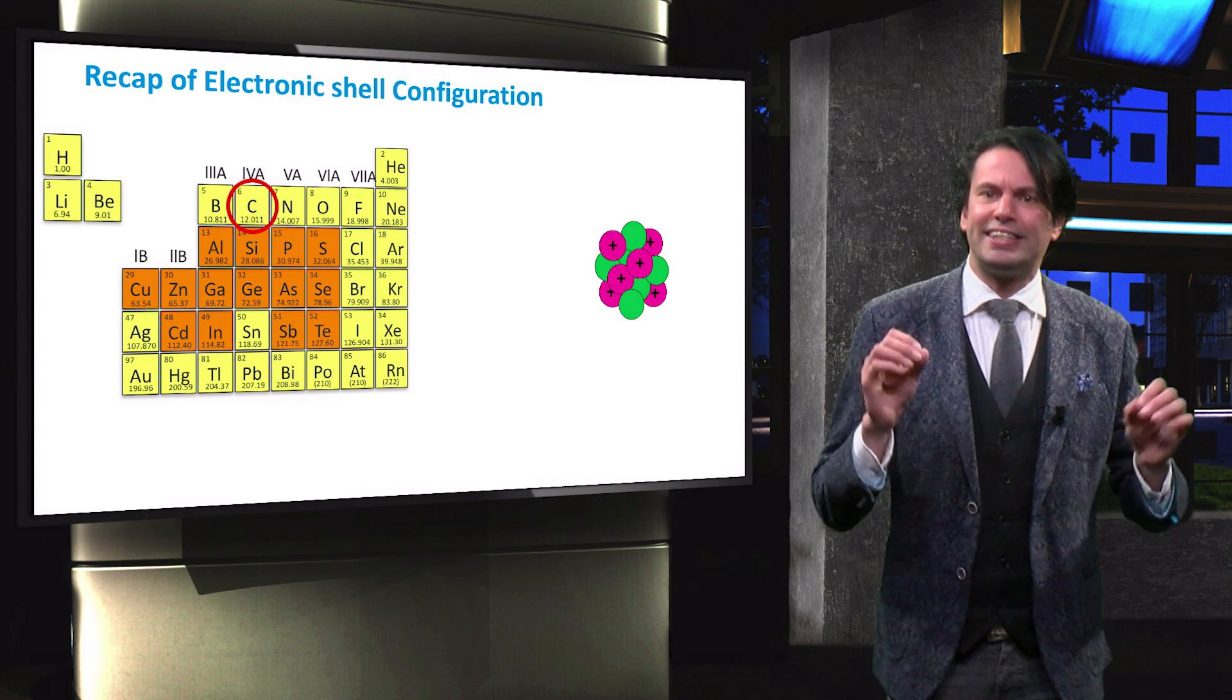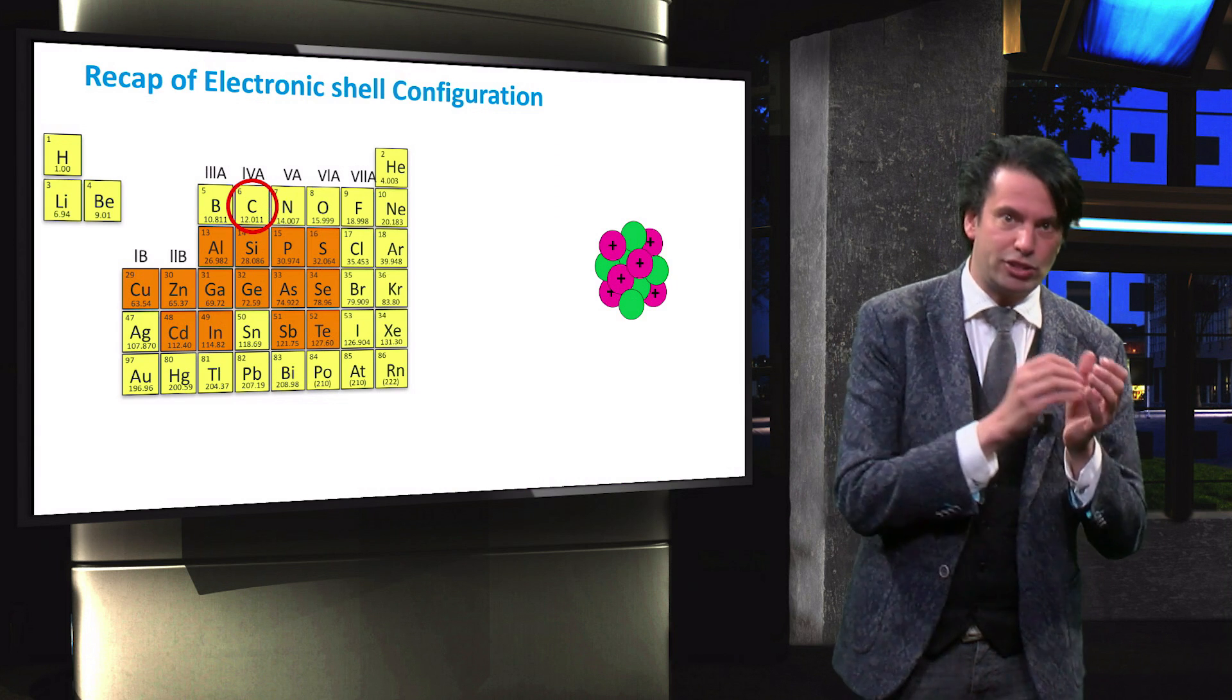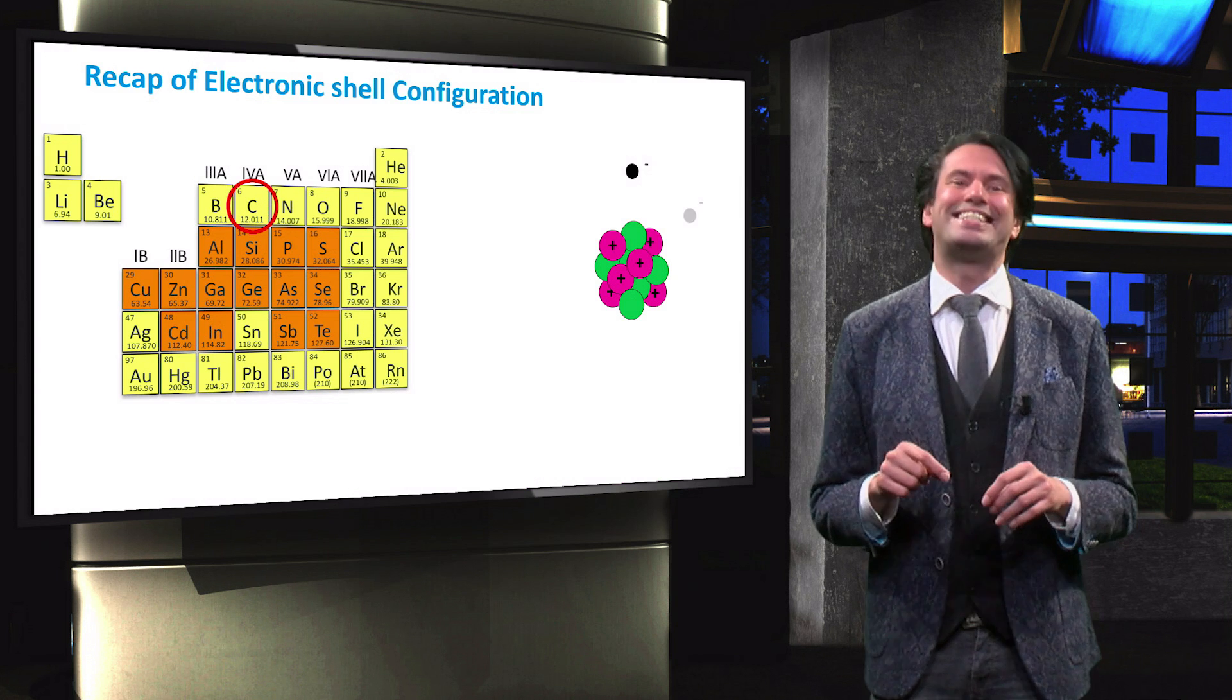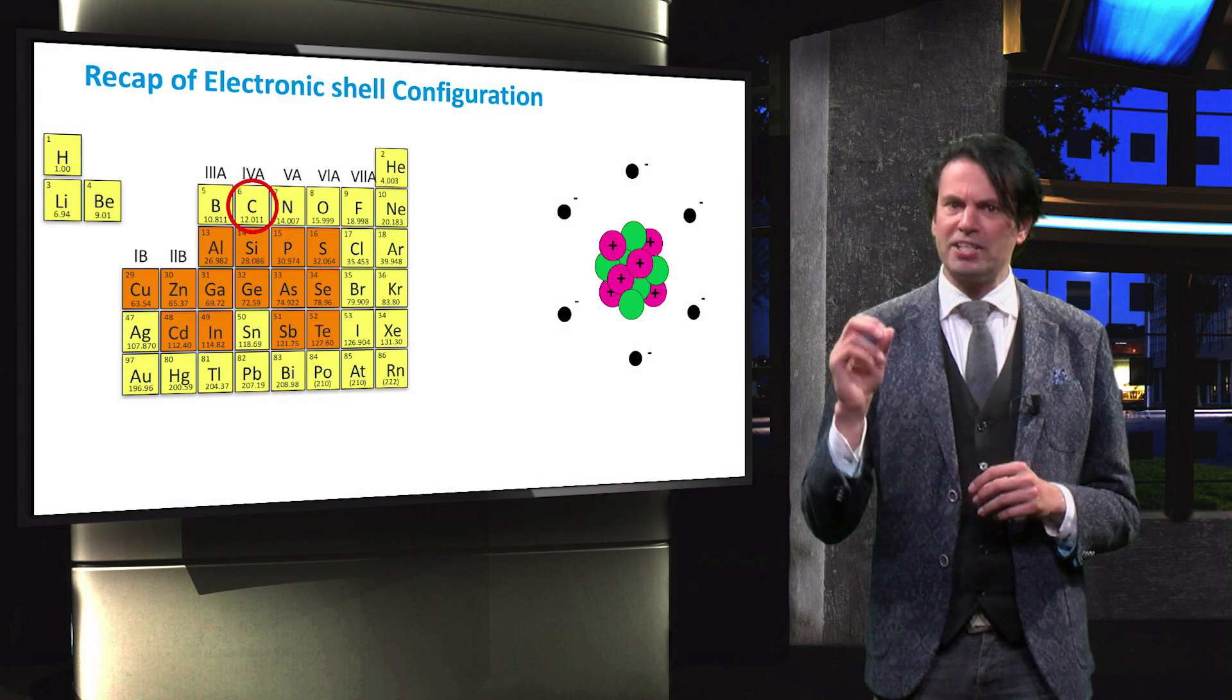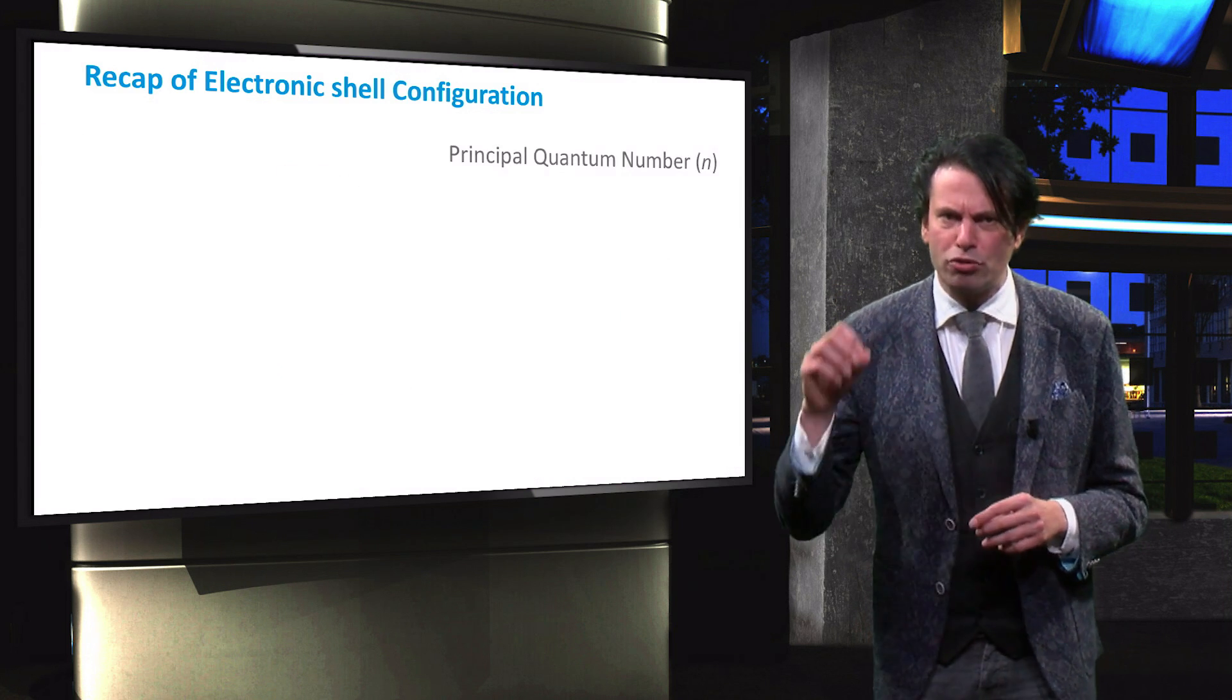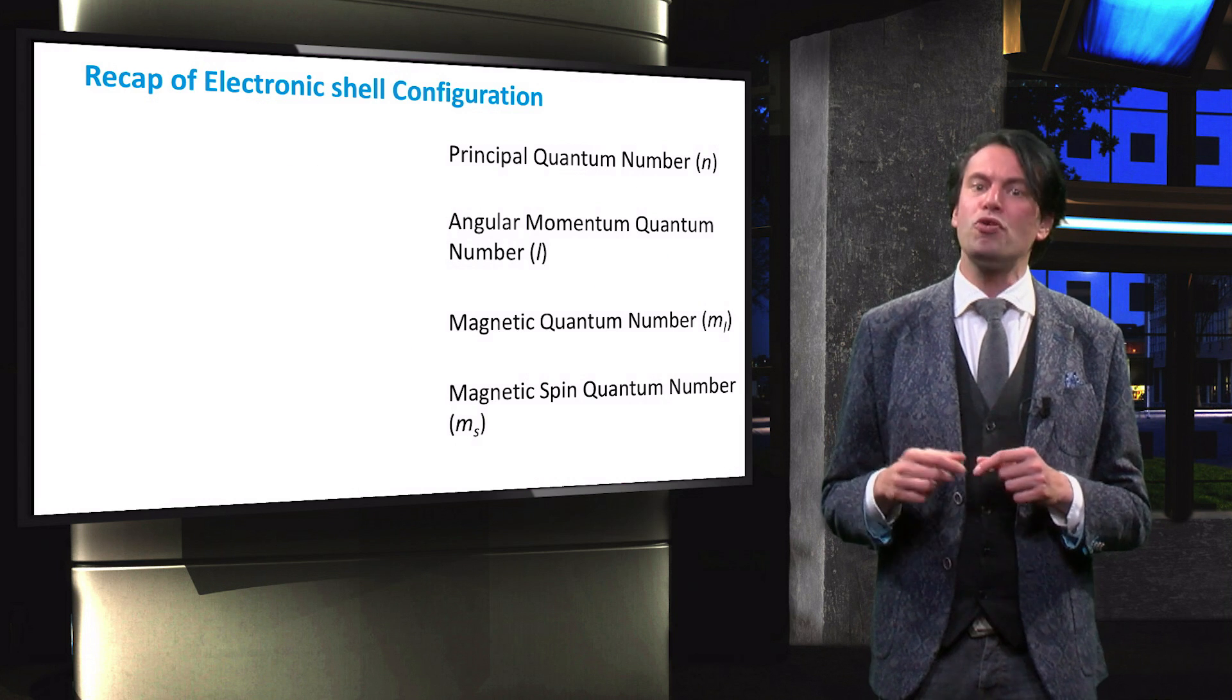Carbon is the sixth element in the periodic table, meaning that it has six positively charged protons in its nucleus. A neutral carbon atom therefore has six negatively charged electrons that revolve around the nucleus. The principles of quantum mechanics obtained by solving Schrödinger's equation shows that these electrons revolve around the central nucleus in different electron clouds, known as orbitals.